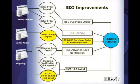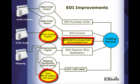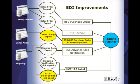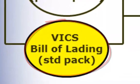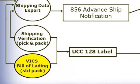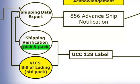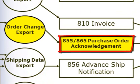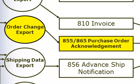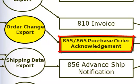This diagram shows the EDI functions supported in version 7.5, with new features highlighted in yellow. Version 7.5 integrates the printing of VIX Bill of Lading and the UCC-128 label with confirmation and shipping adjustment information for the advanced shipping notification. Version 7.5's process is optimized for standard pack scenarios. Also, version 7.5 now supports the 855 and 865 change order EDI mappings, so any changes made to the original 850 purchase order can be immediately exported and sent back as either an 855 or 865 to the trading partner.